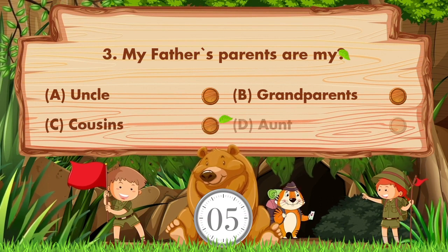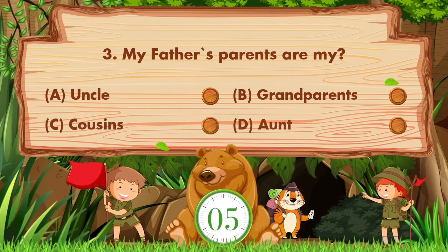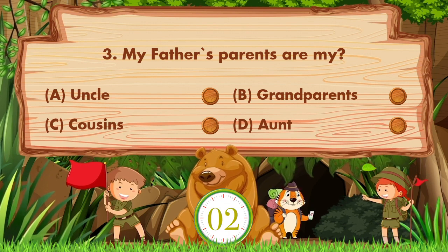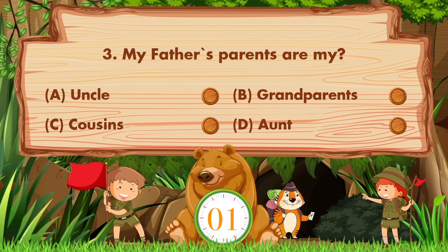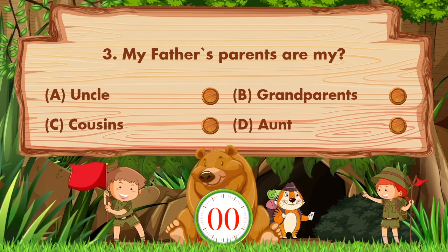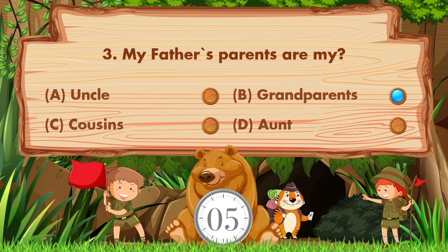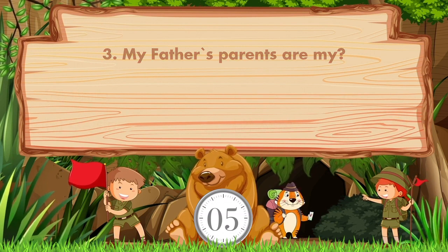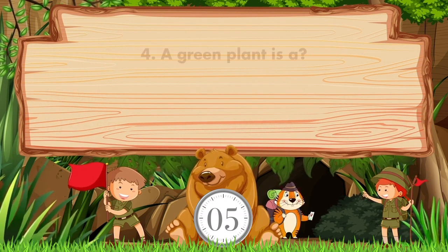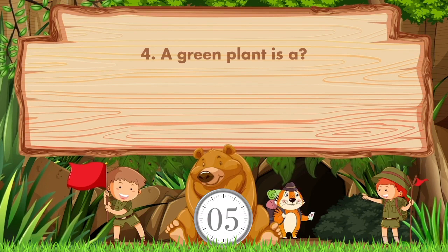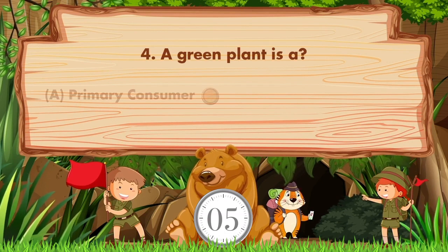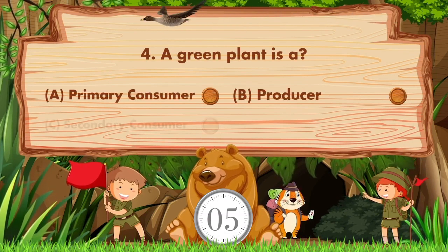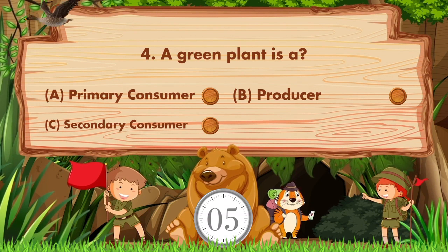My father's parents are my — option A is uncle, B grandparents, C cousins, D aunt. Answer is option B: grandparents.